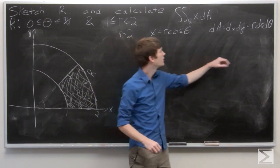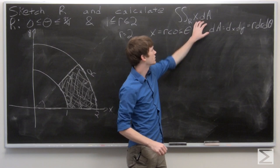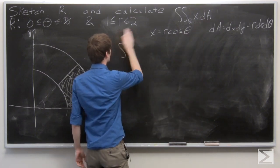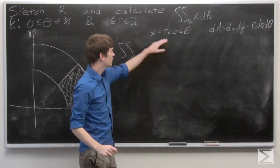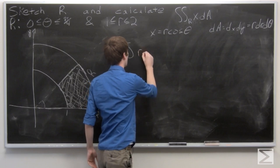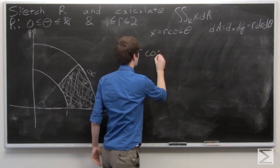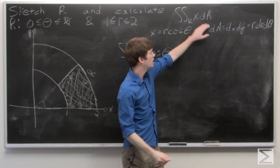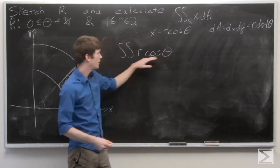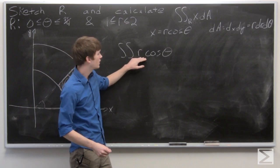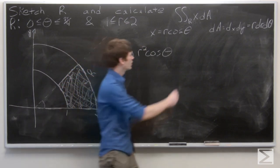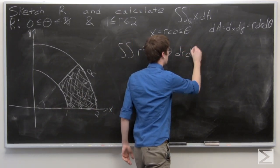So we have our information to evaluate the integral except for our limits. We can plug in our x in terms of polar coordinates is R cosine theta. Our dA is R dr dθ. So multiply R cosine theta by R, we get R squared cosine theta, and then dr dθ.